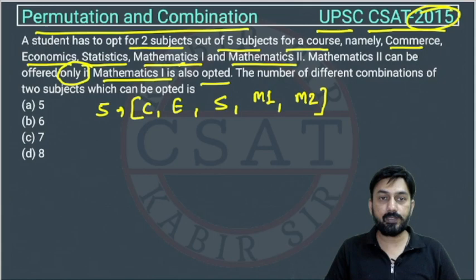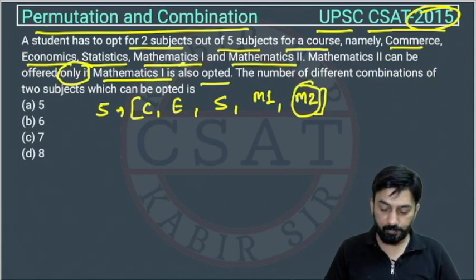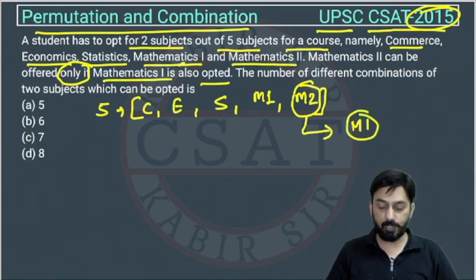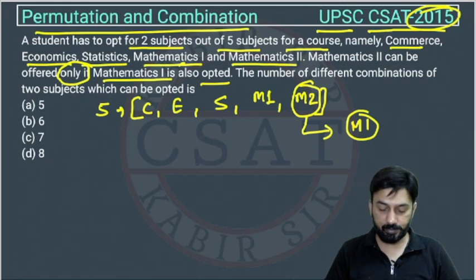But there is one more condition given that Mathematics two will be chosen only if Mathematics one is chosen. Mathematics two cannot come with any other subjects, but Mathematics one can come with other subjects.